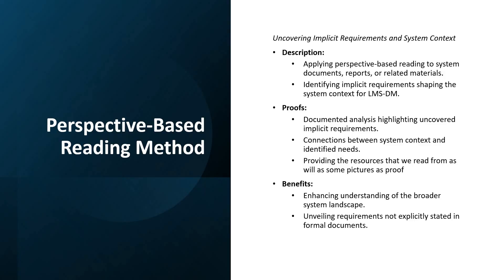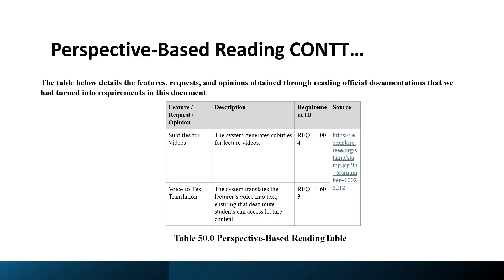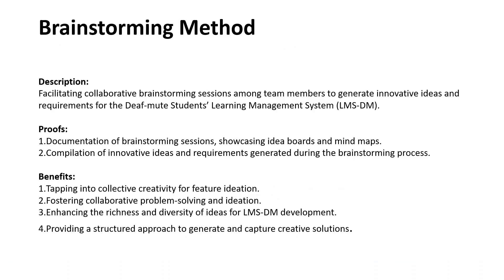Then we have the perspective-based reading method: uncovering implicit requirements and system context. This involves applying perspective-based reading to system documents, reports, or related materials to uncover implicit requirements shaping the system context. The proof includes screenshots of resources reviewed, and all resources are available in the report. The result from this method included identifying subtitles for videos and voice-to-text translation as key features, supported by referenced websites.